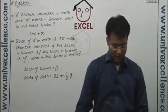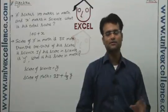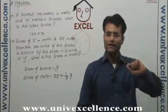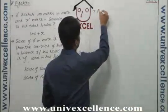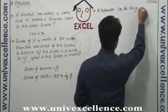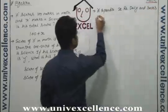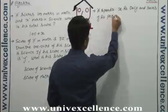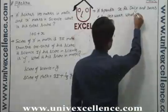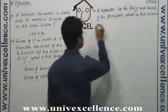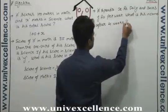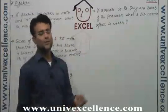The next example: there is a person who spends x rupees daily and saves y rupees per week. What is his income after four weeks? So there is a person spending x rupees per day.